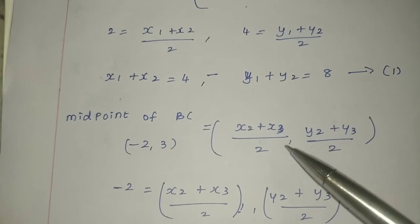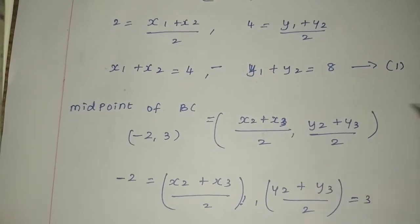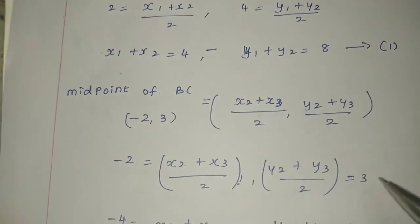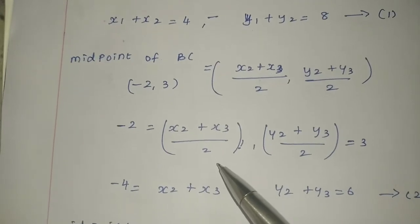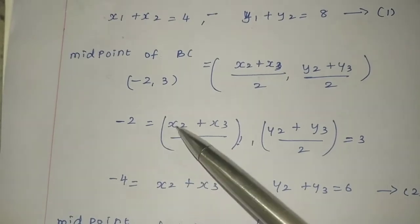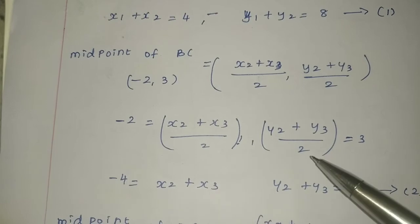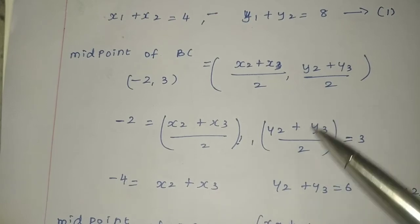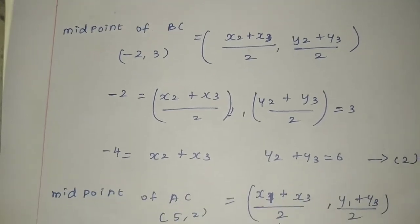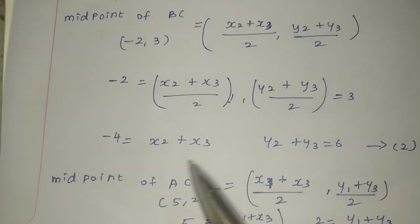For midpoint of BC equals (-2,3), using the same formula: -2 equals (x2 + x3)/2 and 3 equals (y2 + y3)/2. Cross-multiplying gives x2 + x3 equals -4 and y2 + y3 equals 6. This is the second equation.